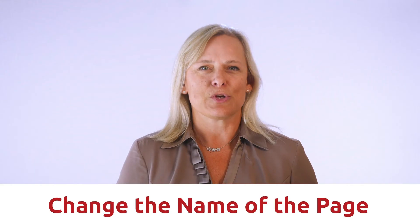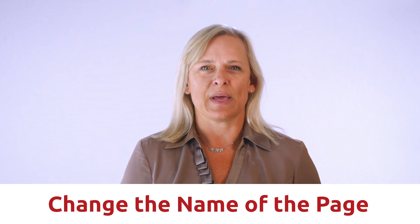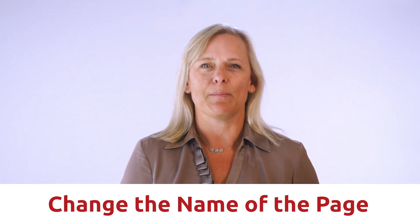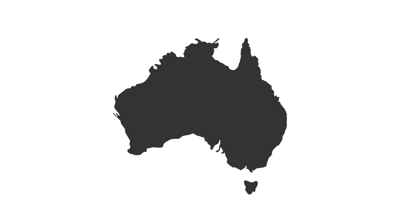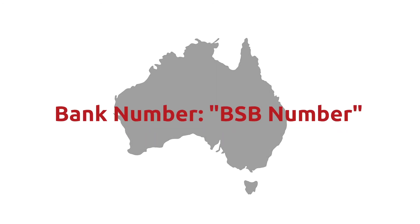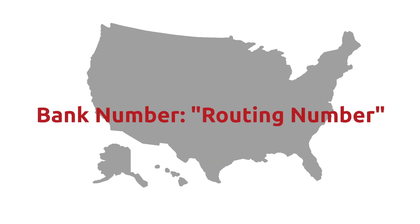Step four: configure the component by pasting in the gateway record ID and the field names, which we copied earlier. You can also change the name of the page along with bank account and bank number. For example, if you are in Australia, you may want the bank number to read BSB number, and if you are in the US, you will most likely want it to read routing number.